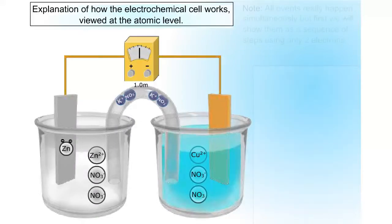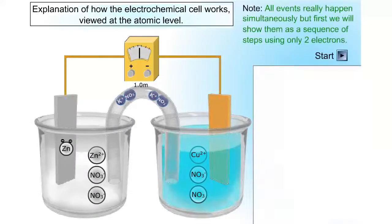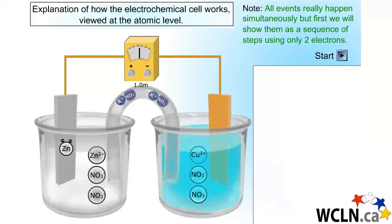We will explain the operation of the electrochemical cell by zooming in on the atoms and ions. You have to keep in mind that all of the events displayed through these screens actually happen simultaneously, but to understand it, we will break it down and explain them one at a time.